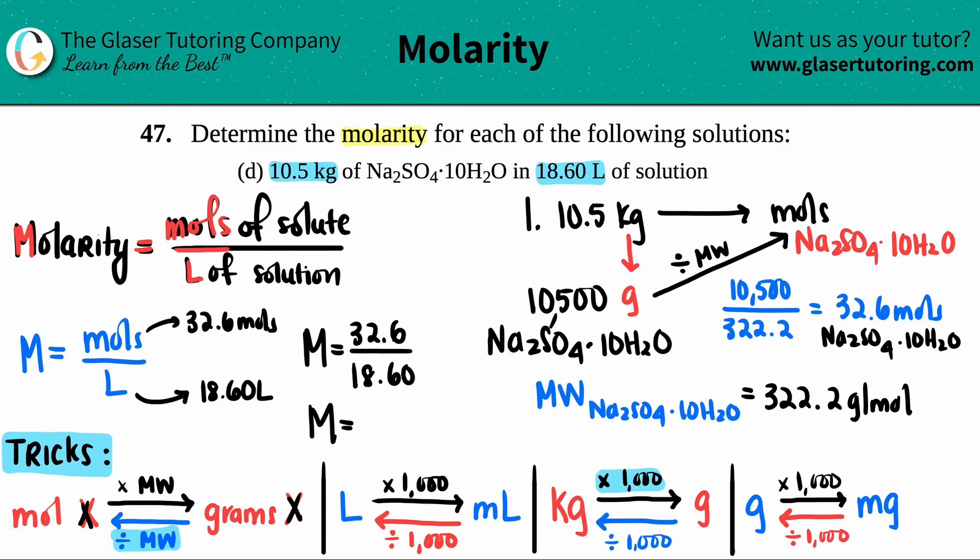Let's find out what that answer is: 32.6 divided by 18.60 - 1.75.